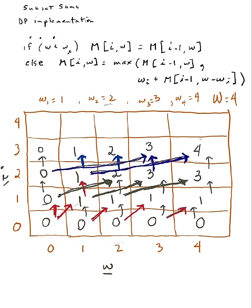The optimum solution for finding a subset from items 1, 2, and 3 gives us a weight of four. I get to that weight of four by using item 3, then not using item 2, then using item 1. Following the arrows backwards: I use 3 (weight 3), I do not use 2, I do use 1 (weight 1). Three plus one equals four.